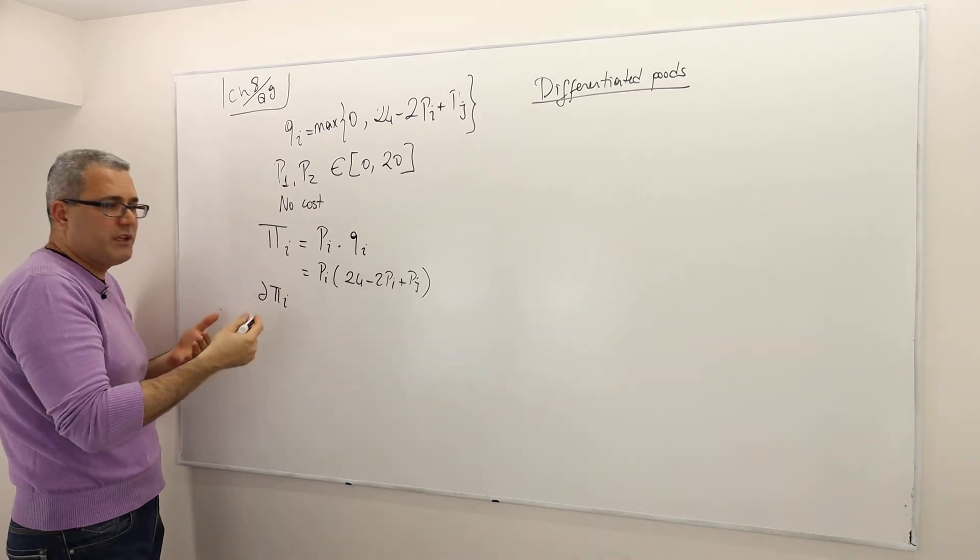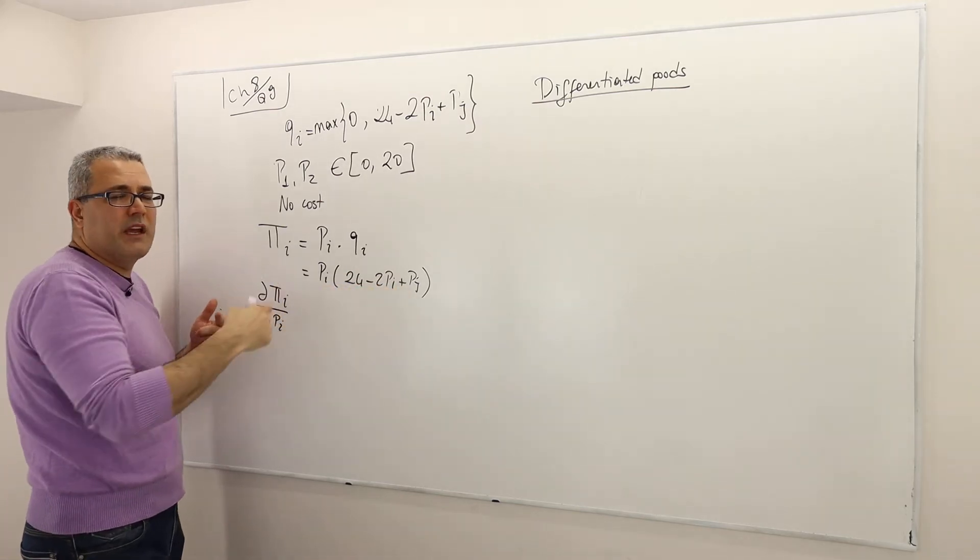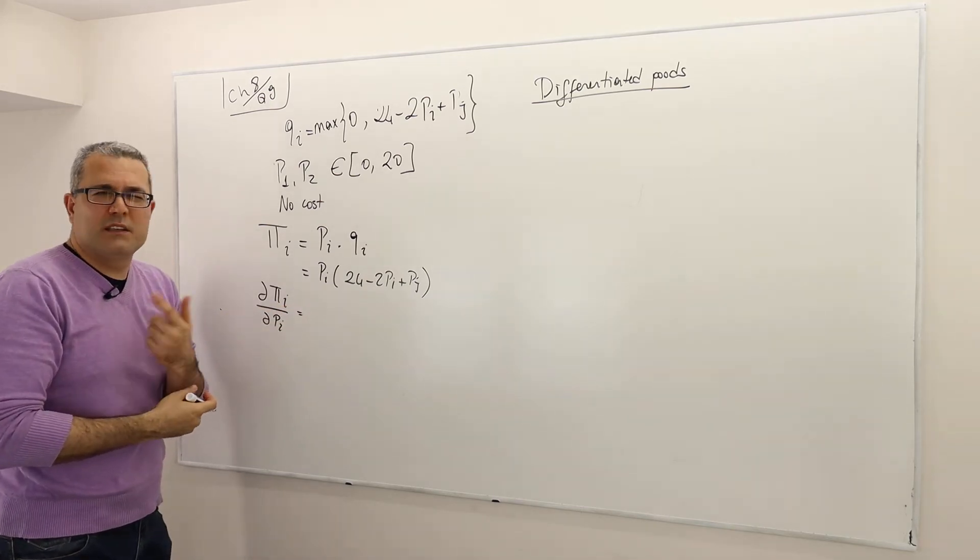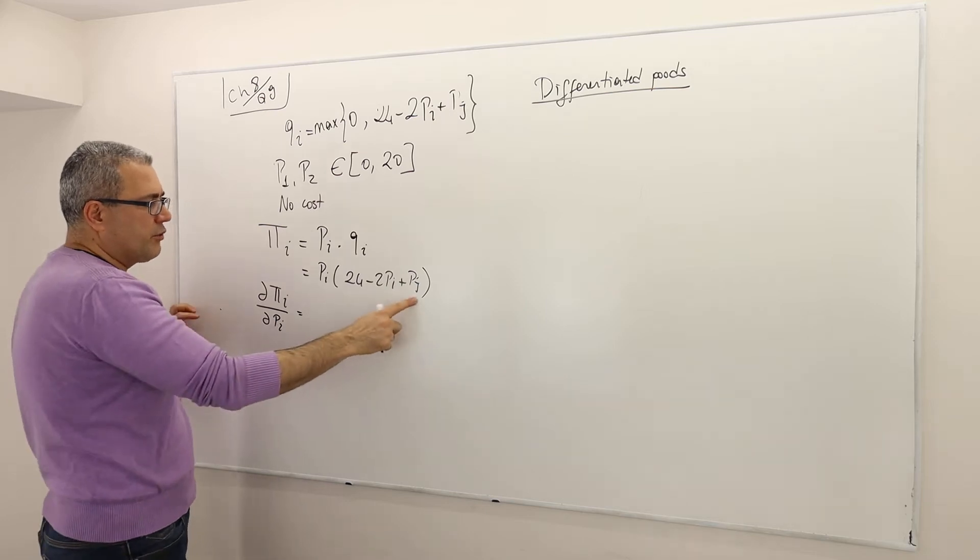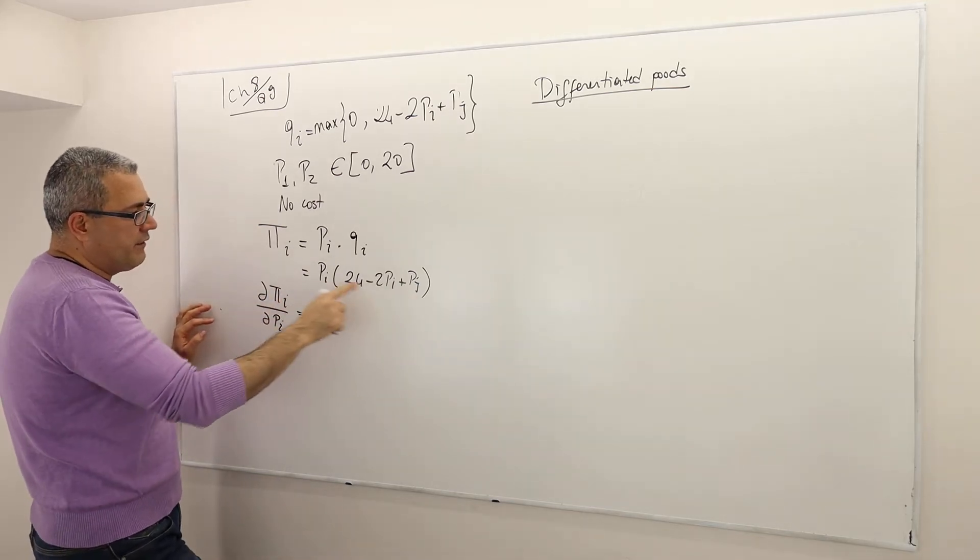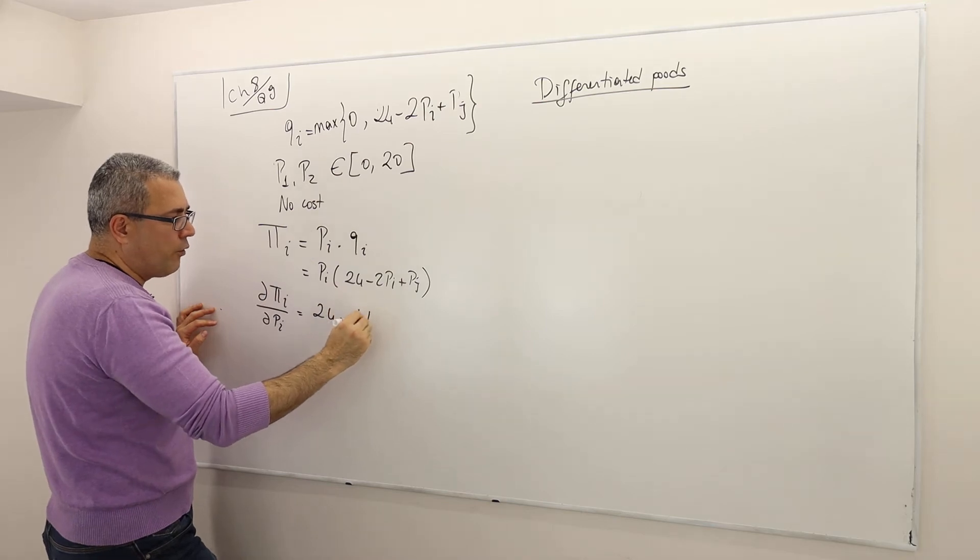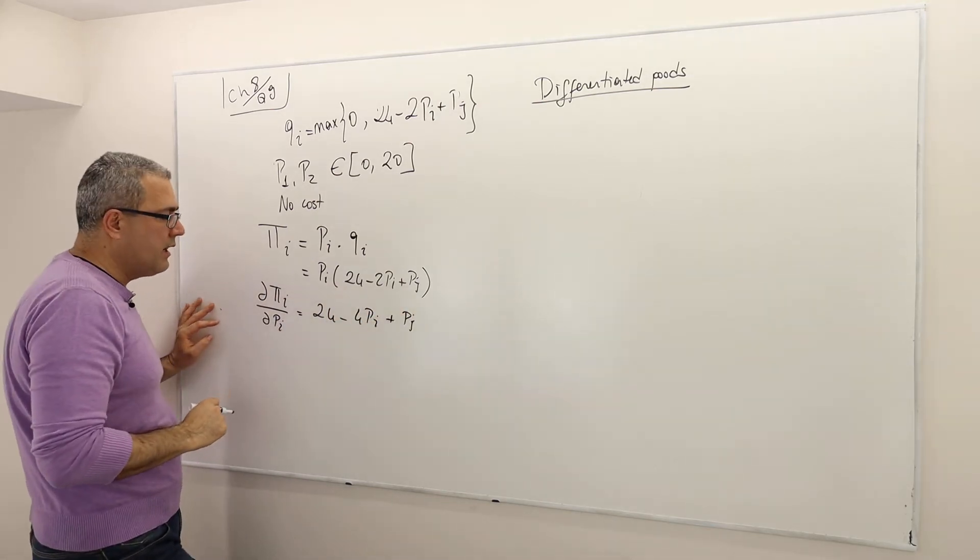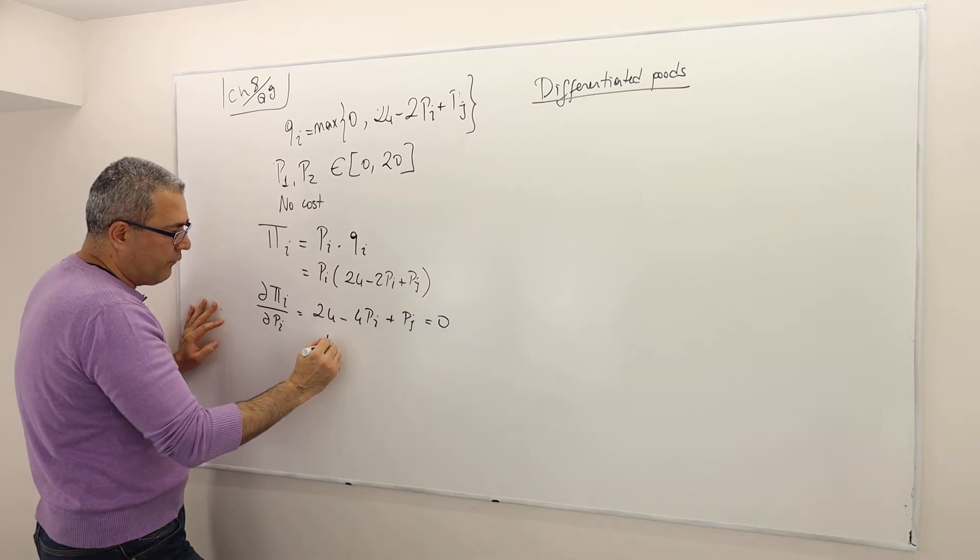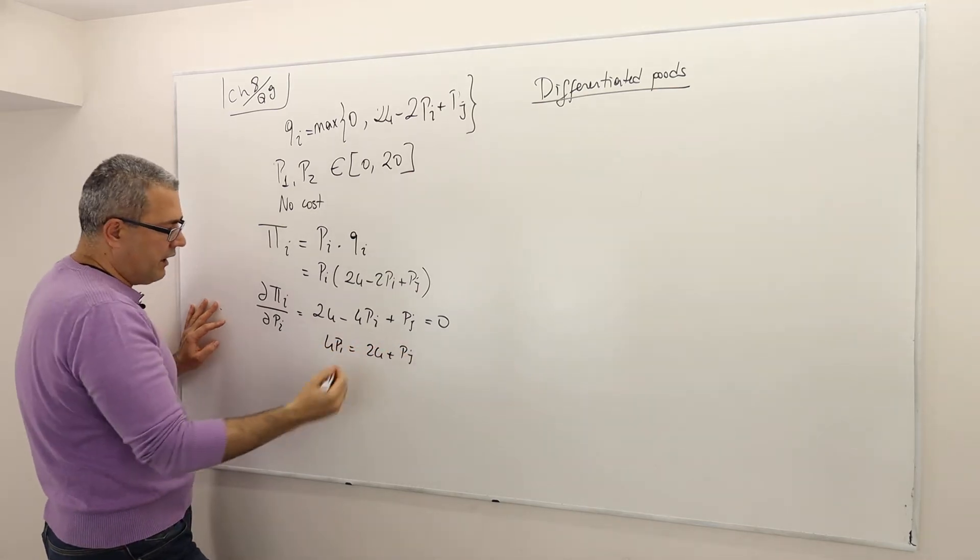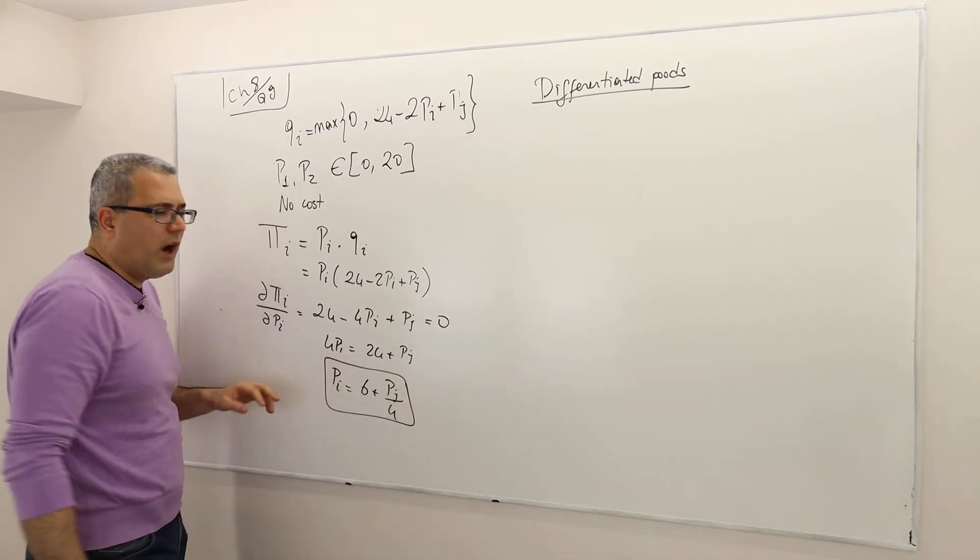So how do you maximize profit? I want to find the best response. So that means we actually find the profit maximizing price given the other player's price. Profit maximizing price of firm i, given that firm j is charging price pj. So what is this partial derivative? It's 24 minus, this is going to be 2pi squared, so if you take the derivative, it's going to be 4pi plus pj. It has to be equal to 0 because this is the critical value. Then solve for pi. 4pi equals 24 plus pj. Divide both sides by 4. So pi must be equal to 6 plus pj divided by 4.